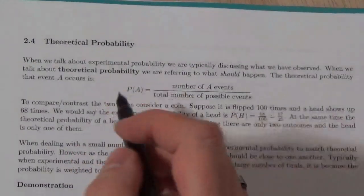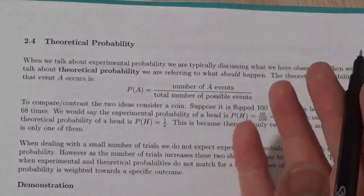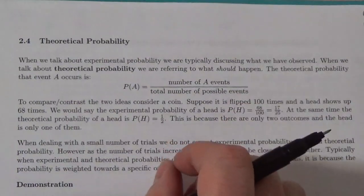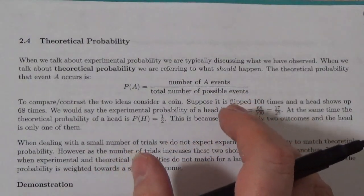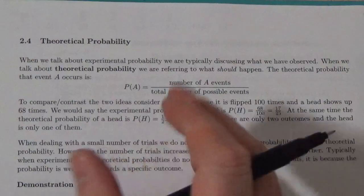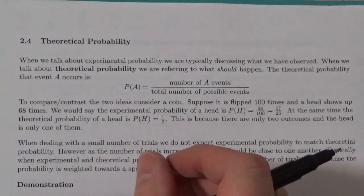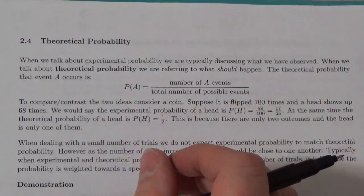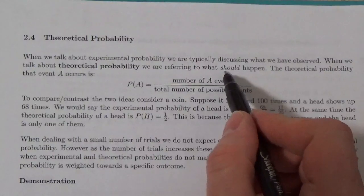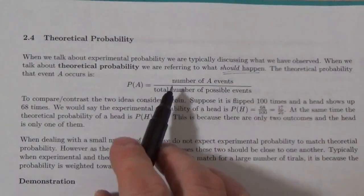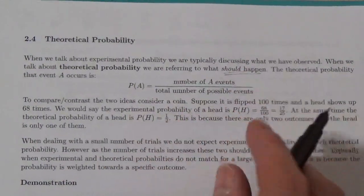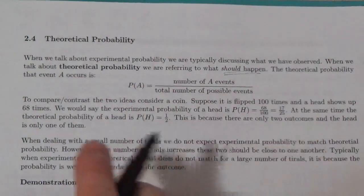Hi everybody. In a previous lesson, we looked at experimental probability, which is probability that you have observed. A theoretical probability is a little bit different. It's what you anticipate should happen - the number of ways event A can happen over the total number of possible ways a scenario can end.